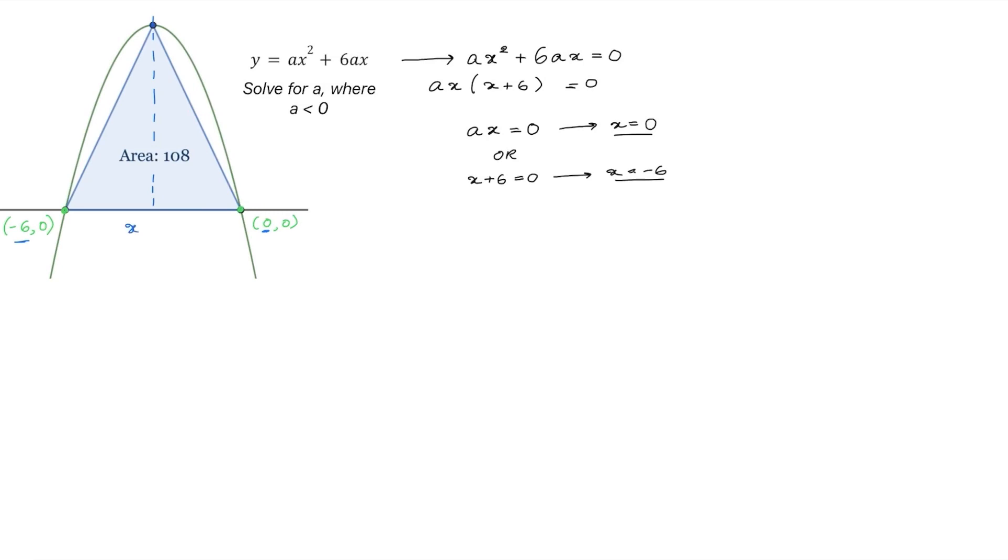We'll set it to x, and the average of our x coordinates of the roots will be negative 6 plus 0 over 2. So the equation for our axis of symmetry is x equals negative 3. And this will be the x coordinate of our vertex. So that will be negative 3.